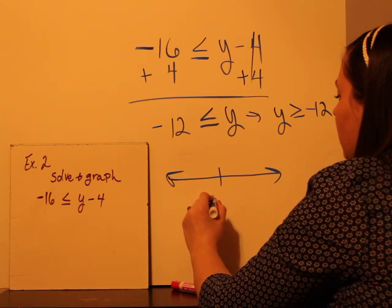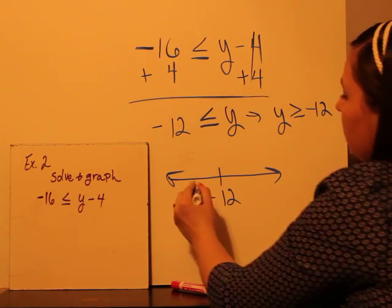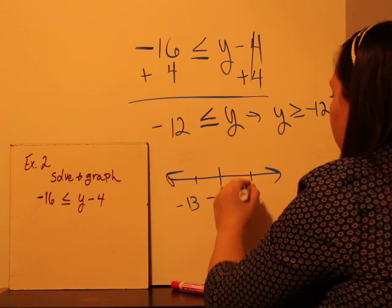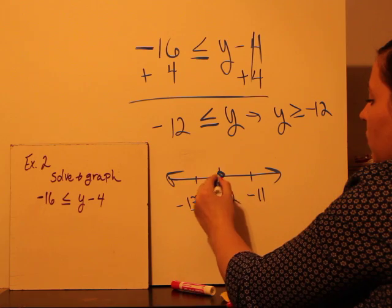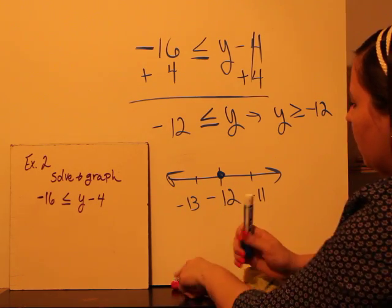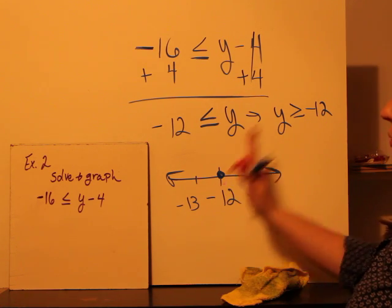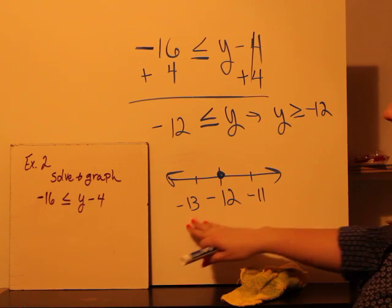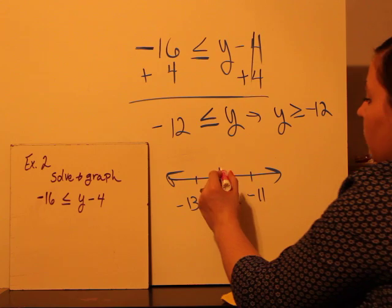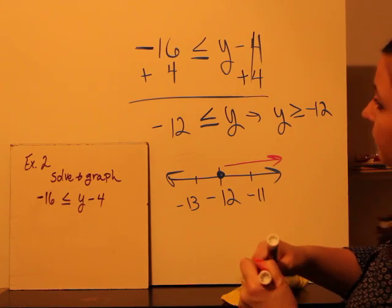So just put negative 12 in the middle. And remember negatives are opposite of positives. So this is going to be negative 13 over here, negative 11 there. Now we're going to graph greater than or equal to. The or equal to makes it a closed circle. And greater than, so greater than means we're going to shade to the right. And if you look at your numbers, who's greater, negative 11 or negative 13? Negative 11 is greater than negative 12, so we shade in that direction there. To the right.